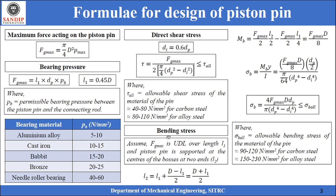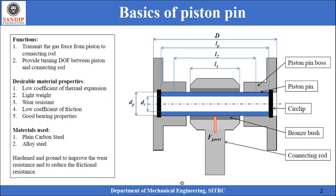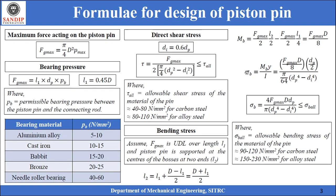To calculate bending stress, Fg_max is assumed to act as a uniformly distributed load over length L1, with the piston pin supported at the centers of the bosses at each end. The distance between the two reaction forces is L2, which can be expressed as L1 + (D − L1)/2, giving the simplified form L2 = (D + L1)/2.